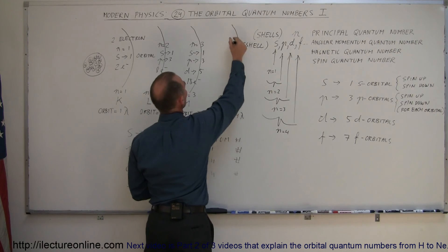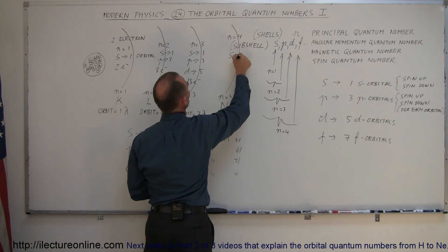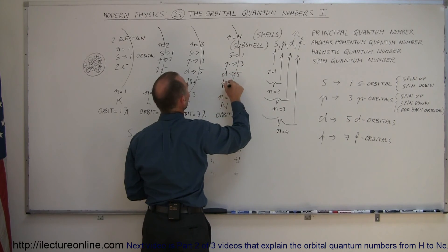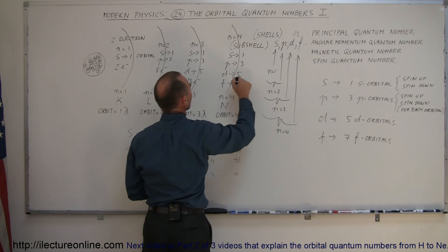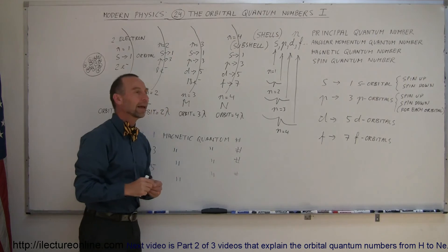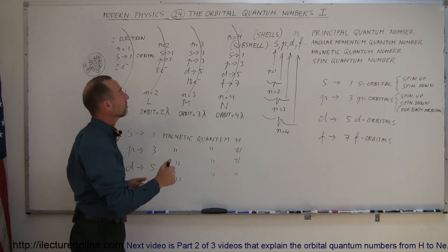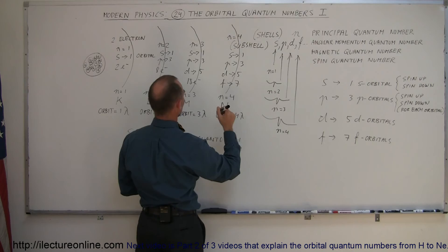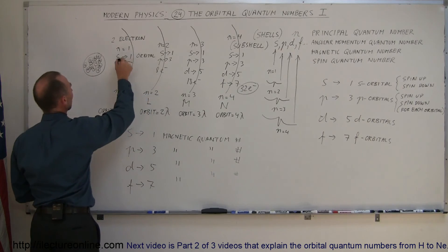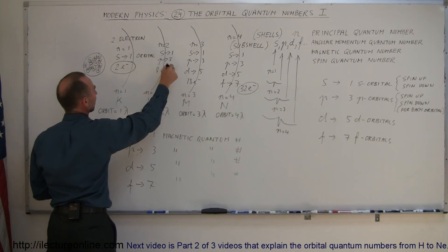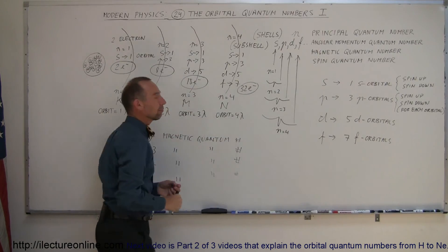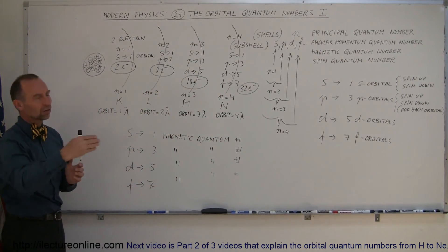In the next energy level, N equals 4, we have one S orbital, three P orbitals, five D orbitals, and seven F orbitals — 16 total orbitals. With two electrons in each, that means it can have 32 electrons. So in the first energy level you can have 2 electrons, in the second 8 electrons, in the third 18 electrons, and in the fourth 32 electrons. It gets more and more complicated, but this lays it out clearly.